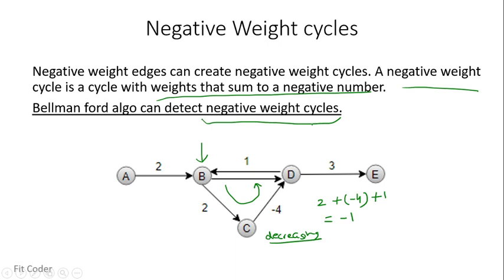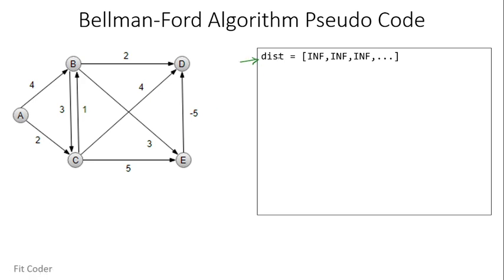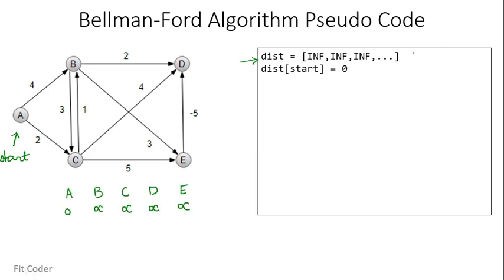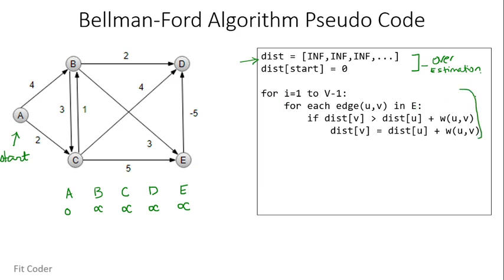If no negative weight cycle is present, it returns the shortest path for all vertices. Now let's look at the pseudocode of Bellman-Ford algorithm. We keep a distance array; for all vertices we initialize the distance to infinity. We pick a start vertex and mark its distance as 0. This step is known as overestimation. Bellman-Ford works in two steps: first it overestimates distances, then it relaxes them. In each cycle we relax the distances, and at the end of all cycles we obtain the result. This step is known as relaxation.